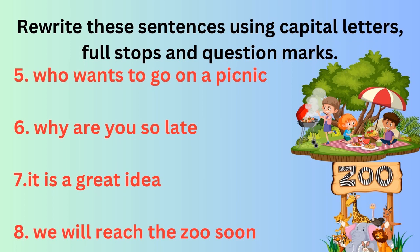Fifth: 'Who wants to go on a picnic?' W is the first letter of this sentence, so W should be in capitals. We are asking a question, so we will put a question mark. Sixth: 'Why are you so late?' The first letter W should be in capitals. We are asking a question — why are you late? — so question mark.